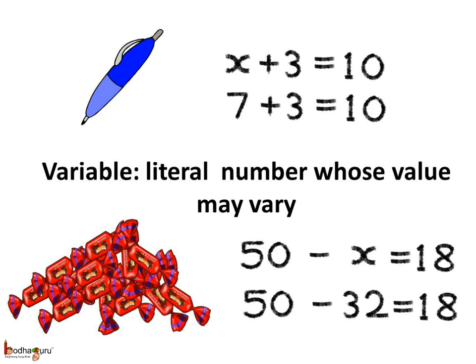The unknown x has a numeric value. The cost of the pen is rupees 7, as 7 plus 3 is equal to 10. And in the second case, 32 candies were taken away, as 50 minus 32 is equal to 18.